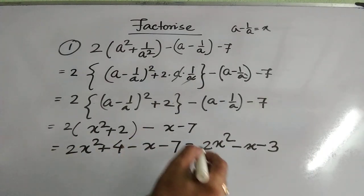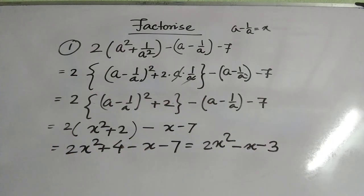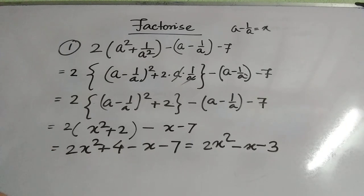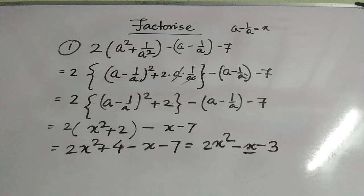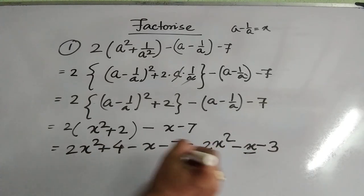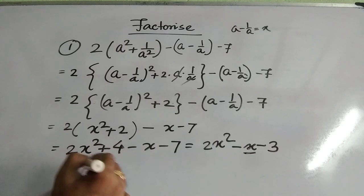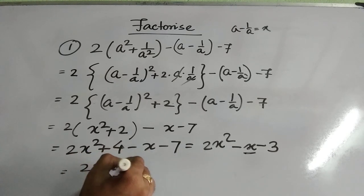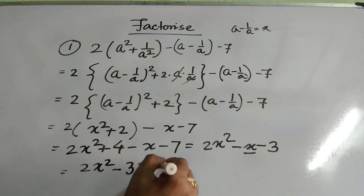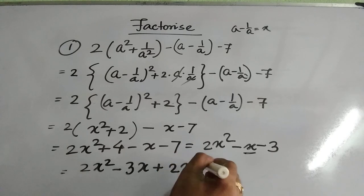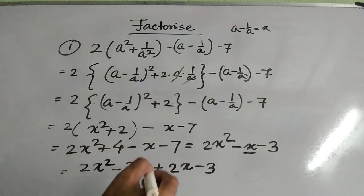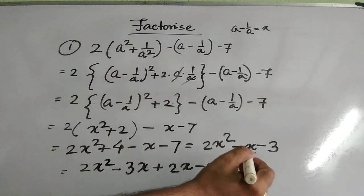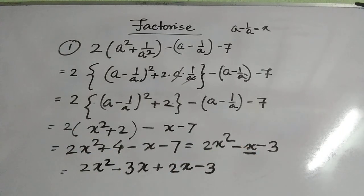Now by the middle term process: the product of 2 and 3 is 6. I need to find two numbers that multiply to 6 and add to -1 (the coefficient of the middle term). Writing this as 2x² - 3x + 2x - 3 works, since -3x + 2x = -x.